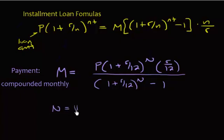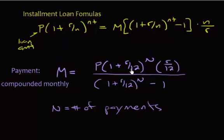Now big capital N equals your number of payments. Notice that they have this 12 floating around — you don't see a 12 up here — because they've already set it up so that it is a monthly payment. So this formula is the same formula as this one; this is just a little bit more generalized than this one.